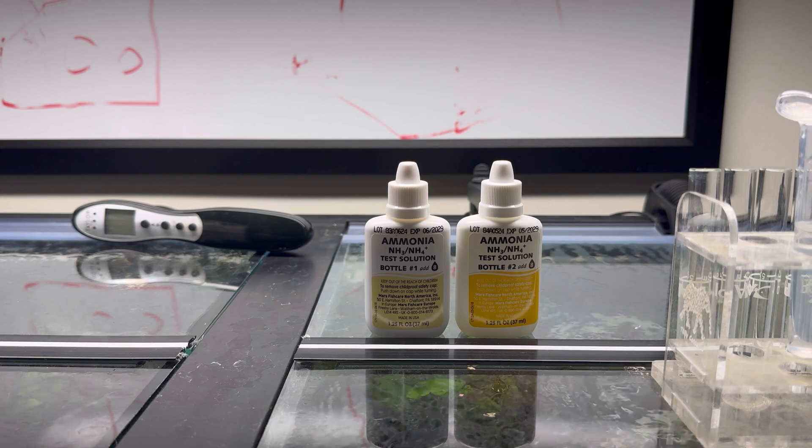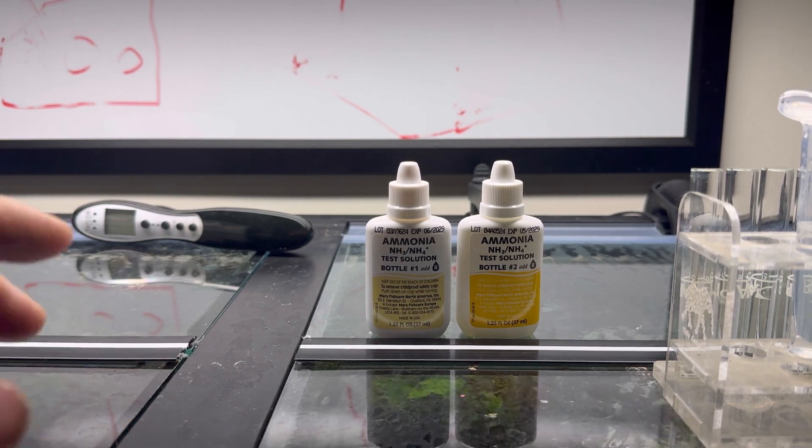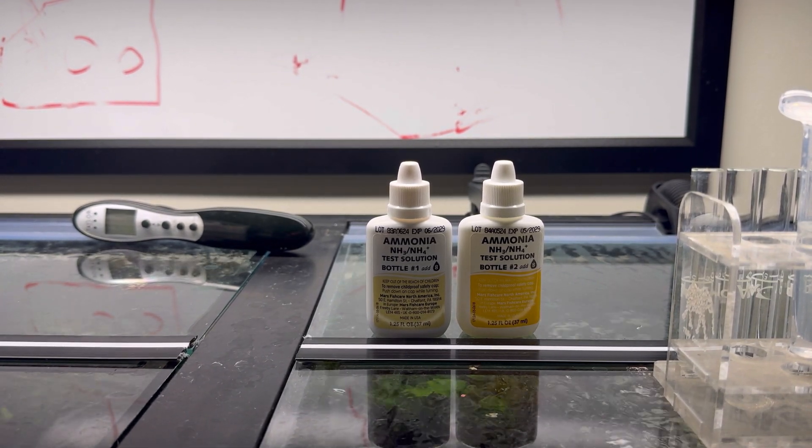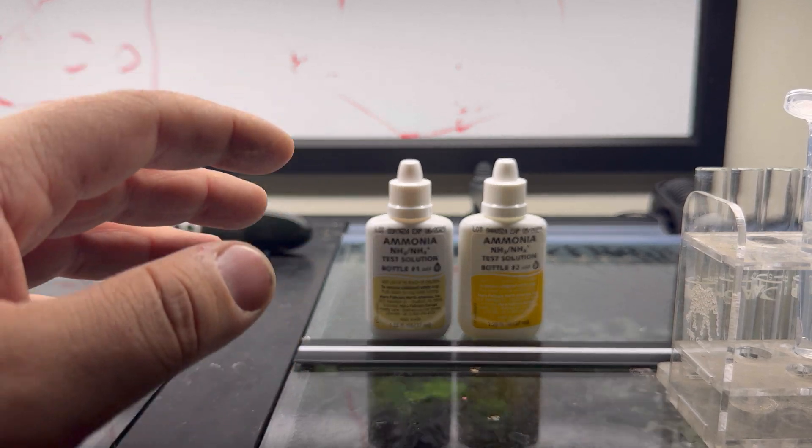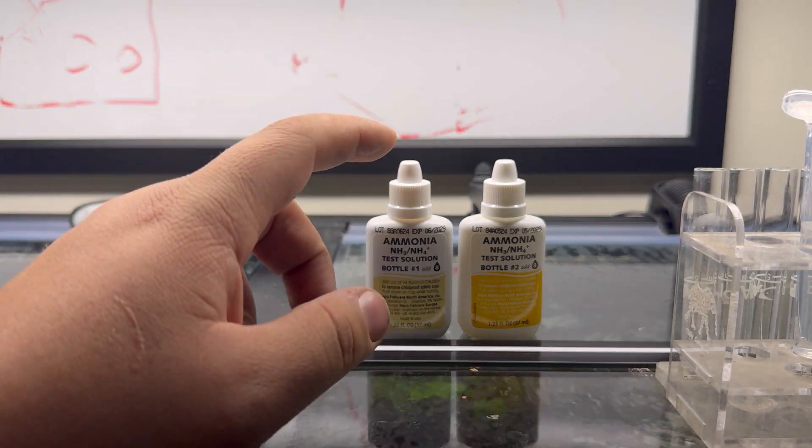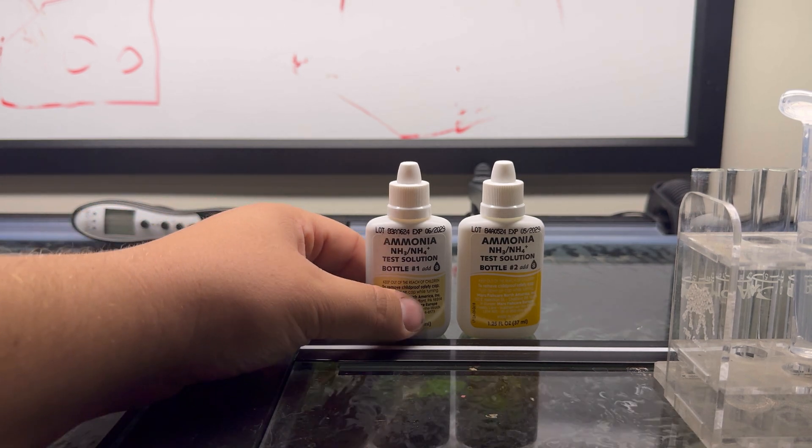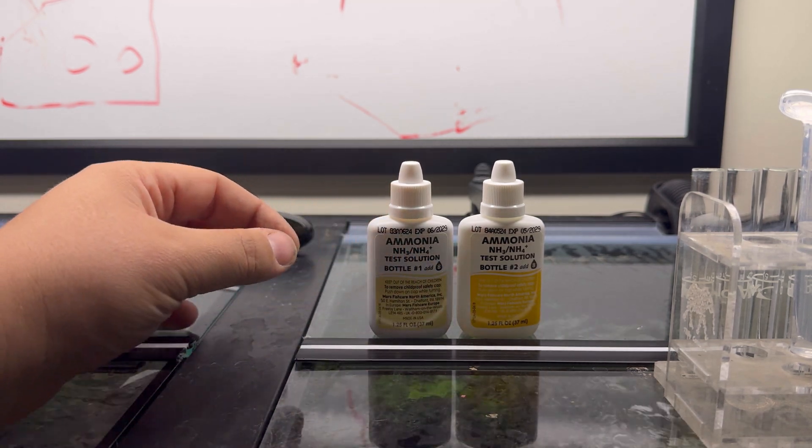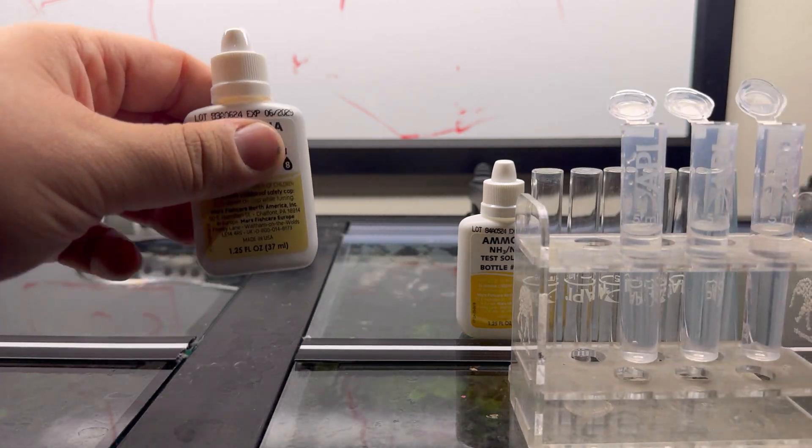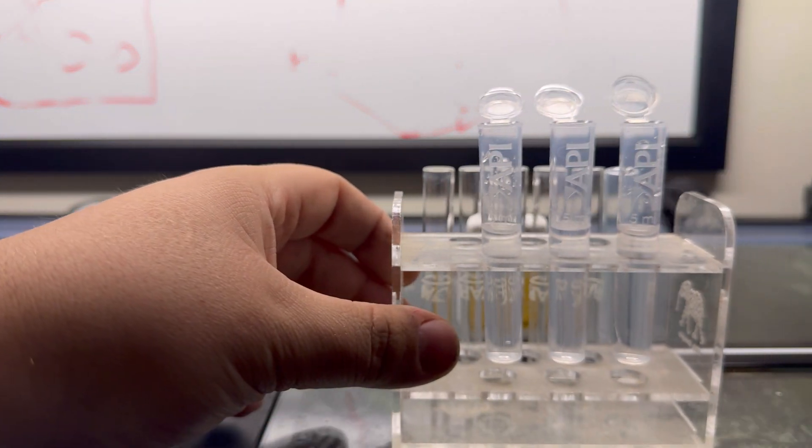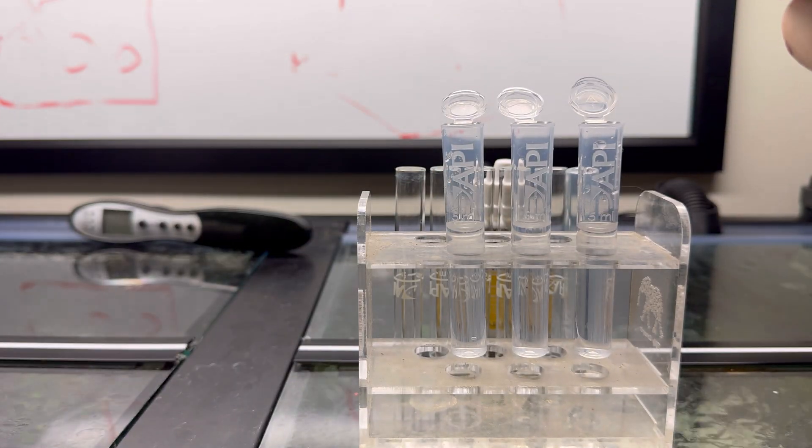Our first test today—you can do this in any particular direction, but I like to do ammonia, nitrite, and then nitrate. Ammonia is a two-part solution, bottle one and bottle two, both requiring eight drops individually. I like to always give mine a quick shake. We're going to do this from left to right.